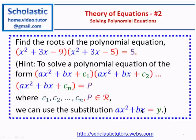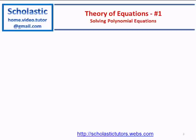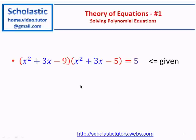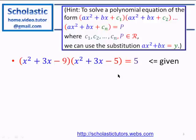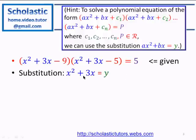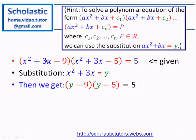Let's see how it works on the given example: (x² + 3x - 9)(x² + 3x - 5) = 5. Our substitution for this case is x² + 3x = y. So we substitute: the first bracket becomes (y - 9) and the second becomes (y - 5).